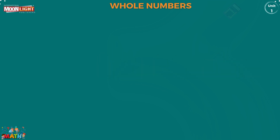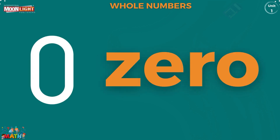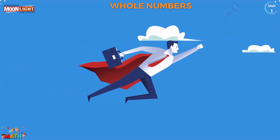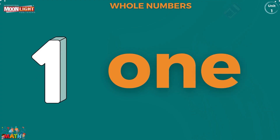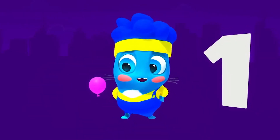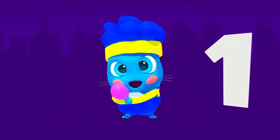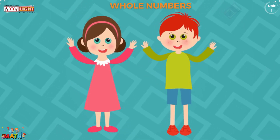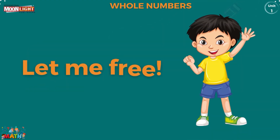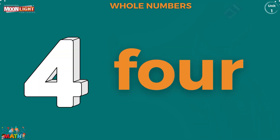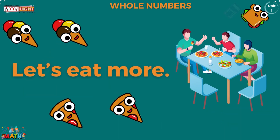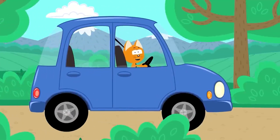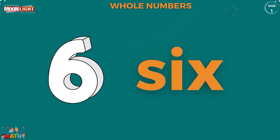Let's remember these numbers from these stories. Zero — zero is my superhero! One — let's have fun! Two — how do you do? Three — let me free! Four — let's eat more! Five — let's go to drive!